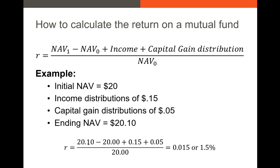We just take the NAV at the end minus NAV at the beginning, plus any capital gains distributions, and divide by our initial NAV. So our total return on this is going to be 1.5%. Pretty straightforward.